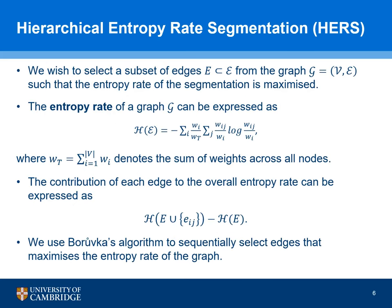Once the pairwise pixel affinities are learned for all the pixels, we then wish to construct a hierarchical tree structure by sequentially selecting a subset of edges from the constructed graph so that the entropy rate of the segmentation is maximized. The entropy rate of a graph can be expressed as a weighted sum of the entropies across all of the subgraphs, where Wt denotes the sum of weights across all nodes. The contribution of each edge to the overall entropy rate is expressed as the difference between the entropy rate with the edge included and without it. We use Borůvka's algorithm to sequentially select edges that maximize the entropy rate of the graph.